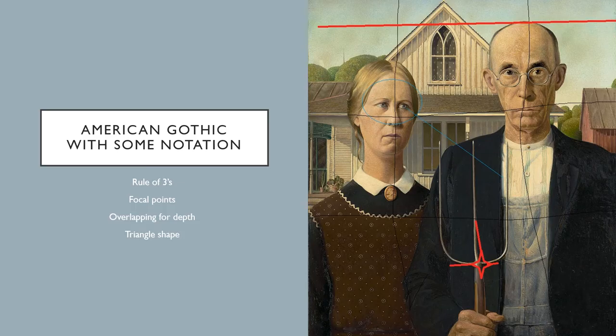So here's the American Gothic, famous painting with some notation. I've taken the liberty of drawing all over them to show the rule of threes. The image is divided in thirds vertically and horizontally.